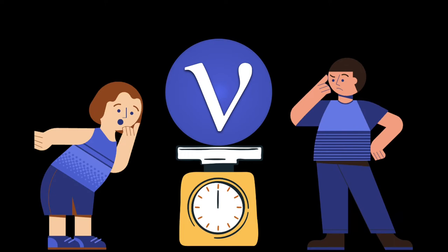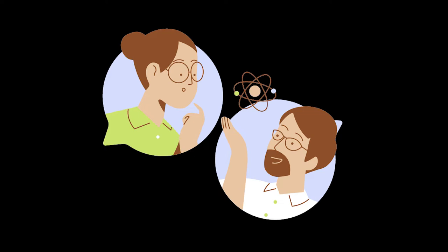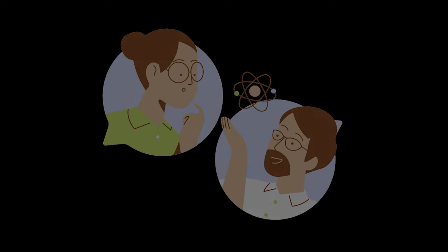Until some years ago, neutrinos were thought to be massless particles like photons, but they do in fact have mass, even if it's super small. Discovering their precise mass is bound to lead to fundamental changes in our knowledge of physics and astronomy. Many more discoveries about neutrinos are yet to be made.